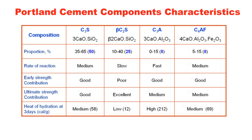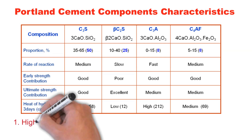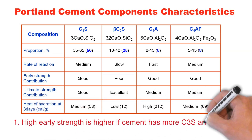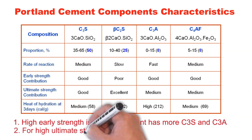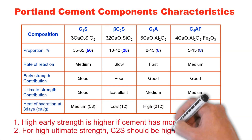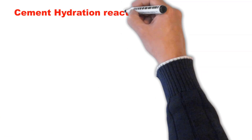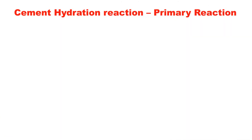Based on these characteristics, we can tailor the cement composition for specific applications. If you want very high early strength, as used in precast applications, you can have a high amount of C3S in the clinker. If you want very high ultimate strength, you can have a higher proportion of C2S. By changing the proportion of raw materials, you can achieve the required characteristics in the Portland cement clinker.